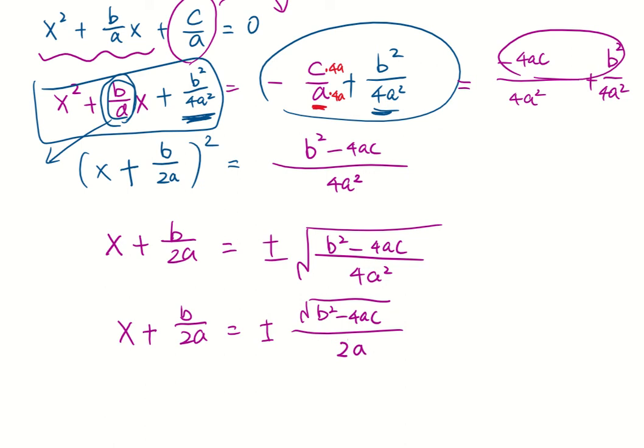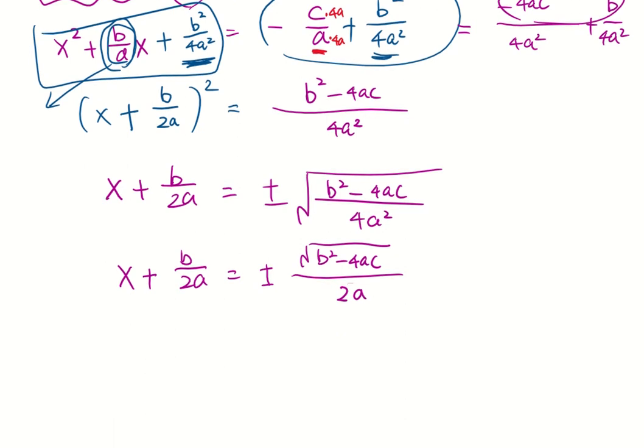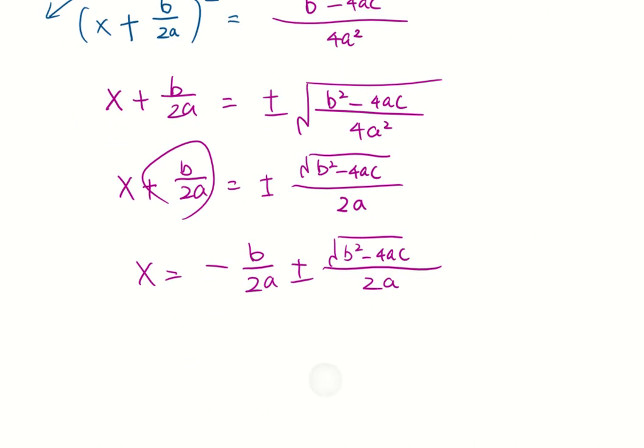Okay, let's leave x by itself. Subtract b over 2a equals negative b over 2a plus or minus square root of b squared minus 4ac over 2a. Since these two terms have the common denominator, let's combine them.